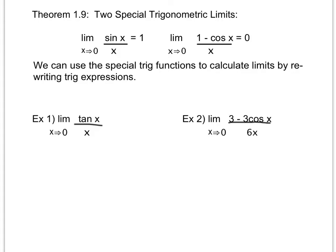The limit as x approaches zero of sine of x over x is equal to one. And the limit as x approaches zero of one minus cosine of x over x is equal to zero. You do have to memorize these, so make sure you've got them down — highlight them, star them, box them, whatever you need to do. You need to make sure you can come up with those on your own.